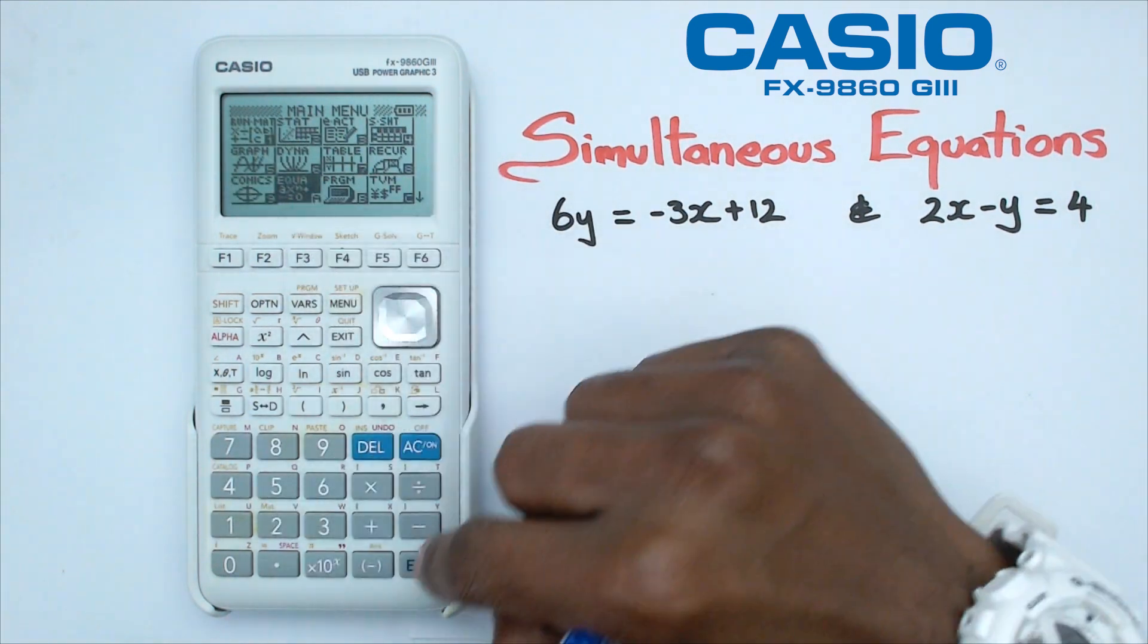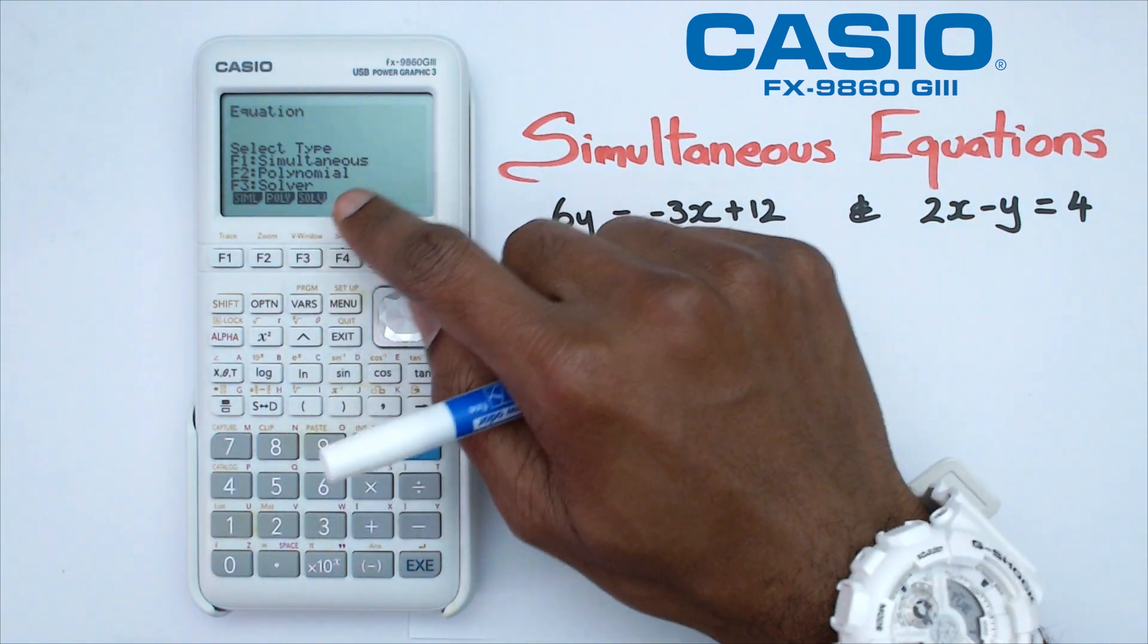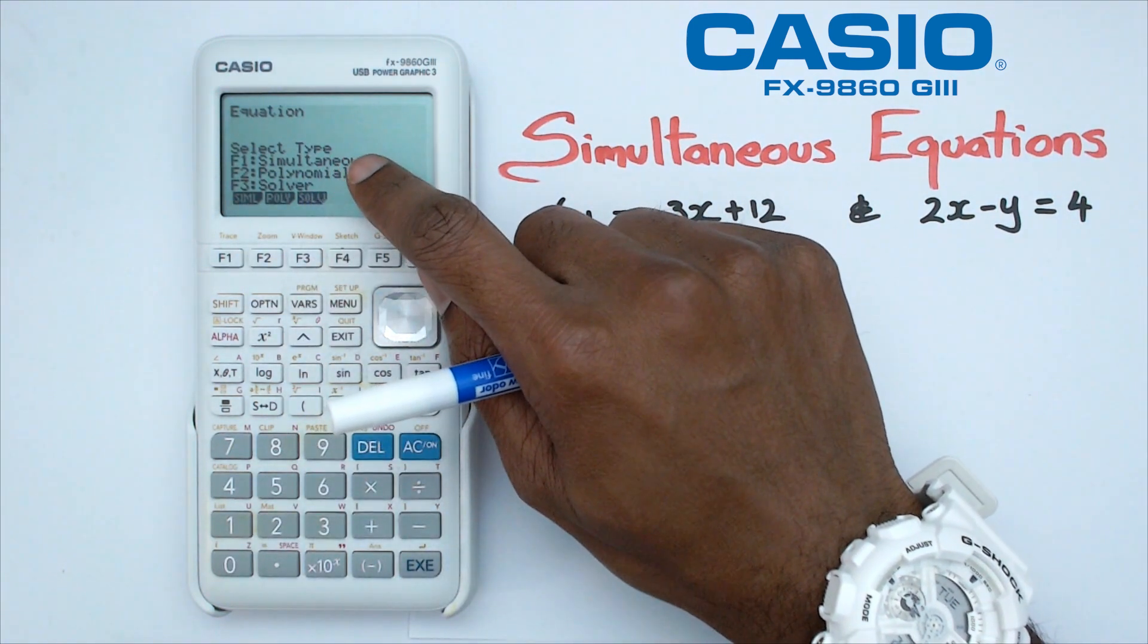We're going to click on enter and you should have these three menus here. We are going to click on F1, which is simultaneous. So that's F1 there.